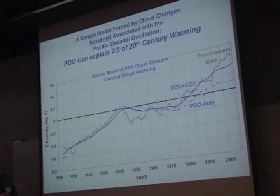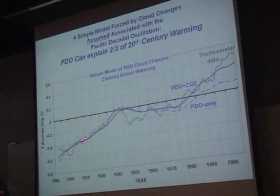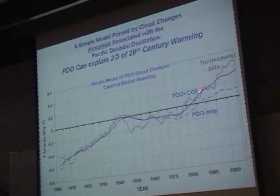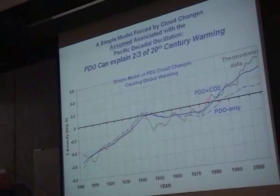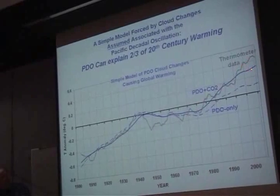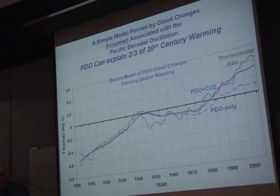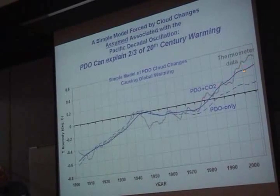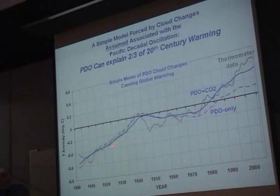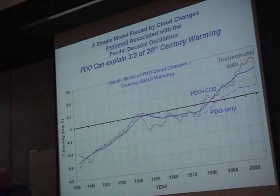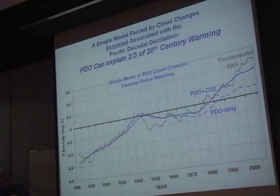The gray line is the observations again — that's our best estimate for the last hundred years of surface temperatures. And then here's what I get when I add carbon dioxide. The PDO gives two-thirds of the long-term warming; the extra CO2 gives one-third.